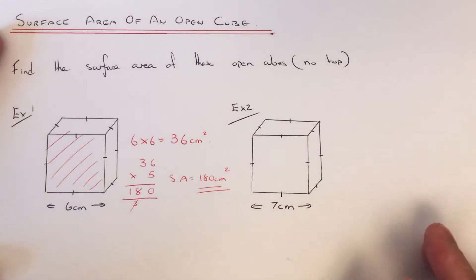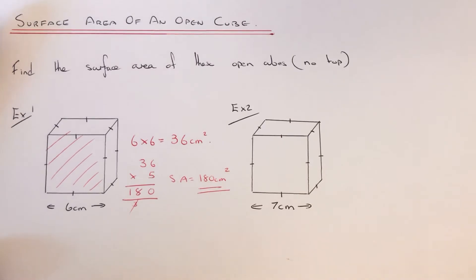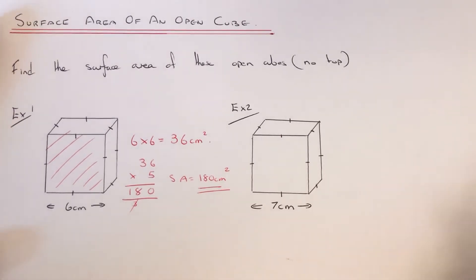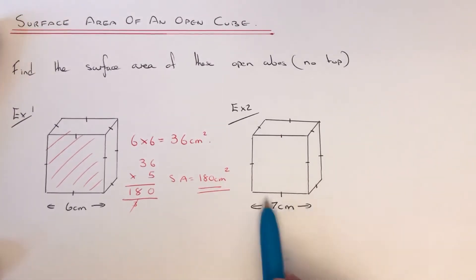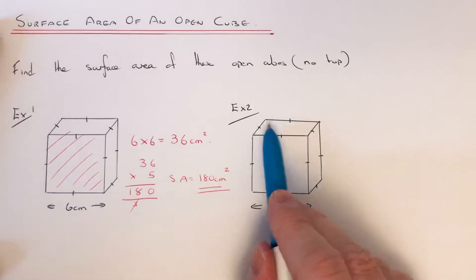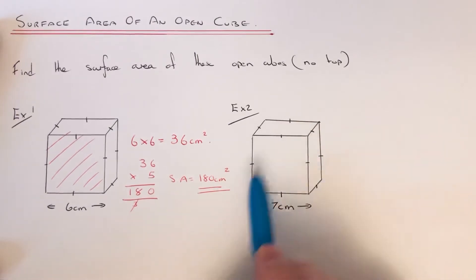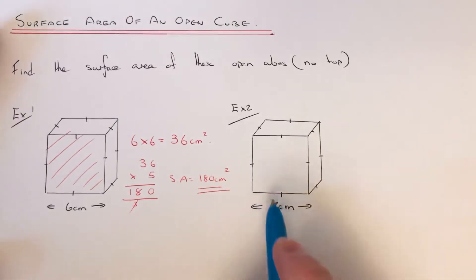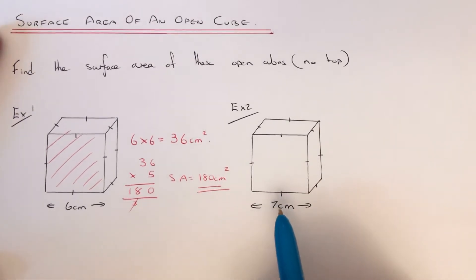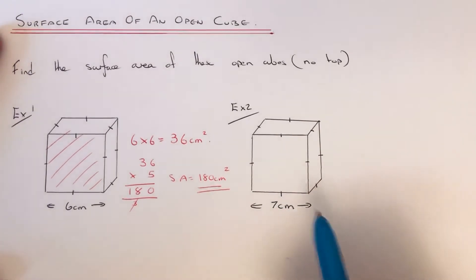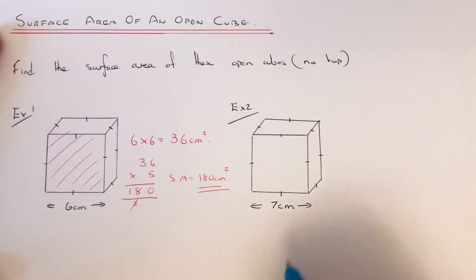Let's have a look at the second example. Again, we have a cube, but the top face is missing, so we only have 5 faces. And all the edges are 7cm long.